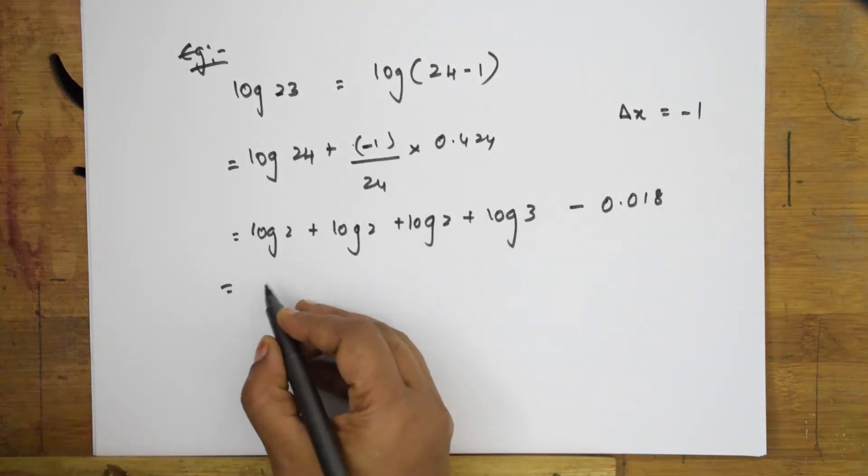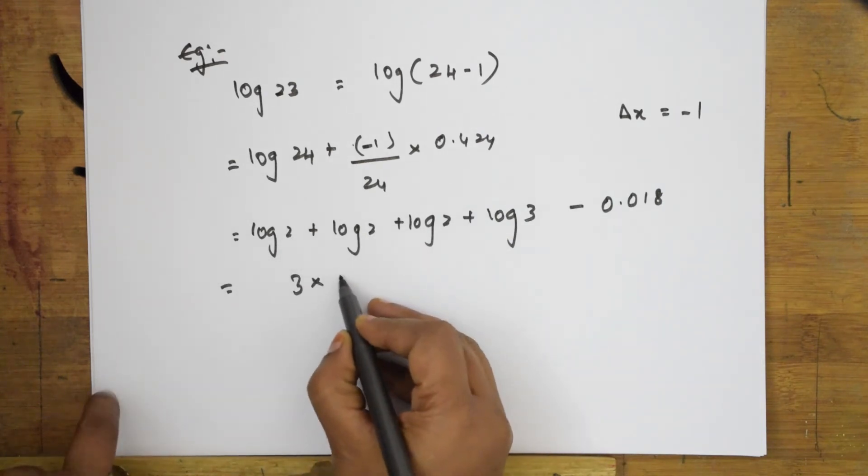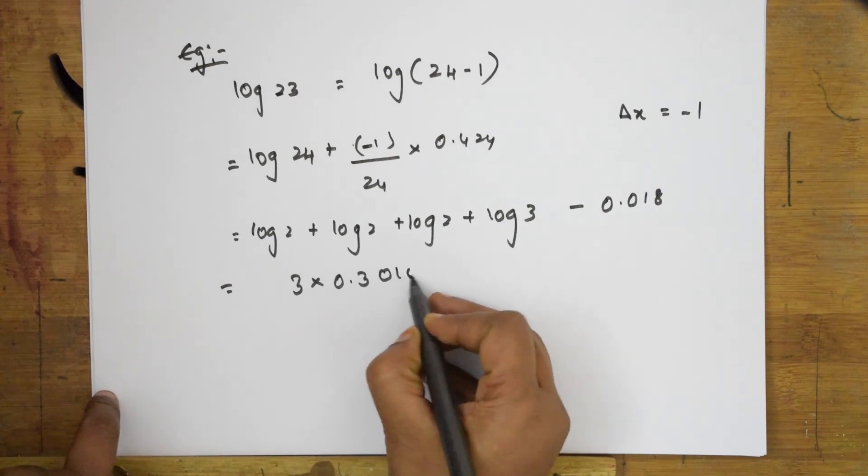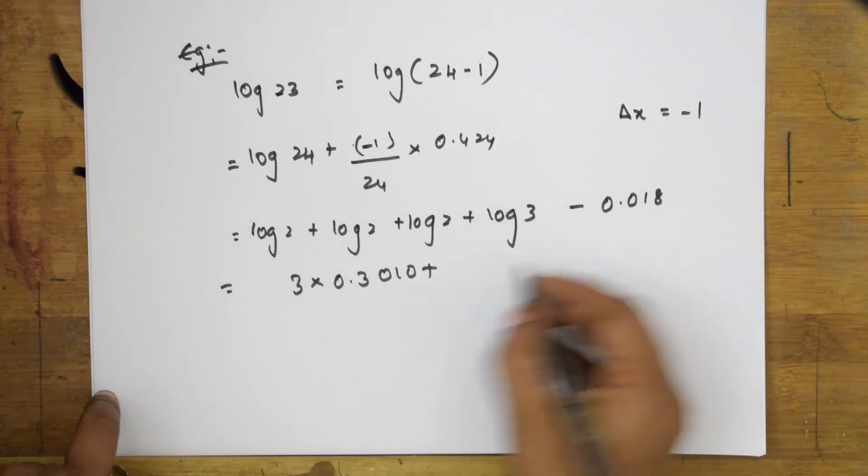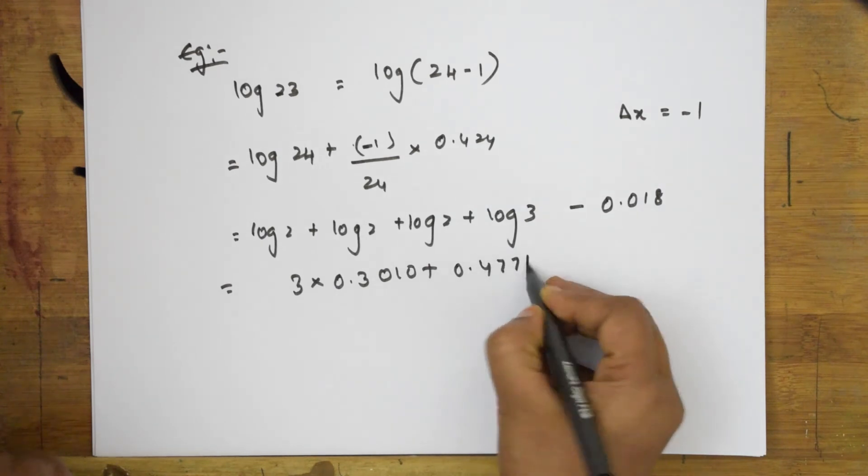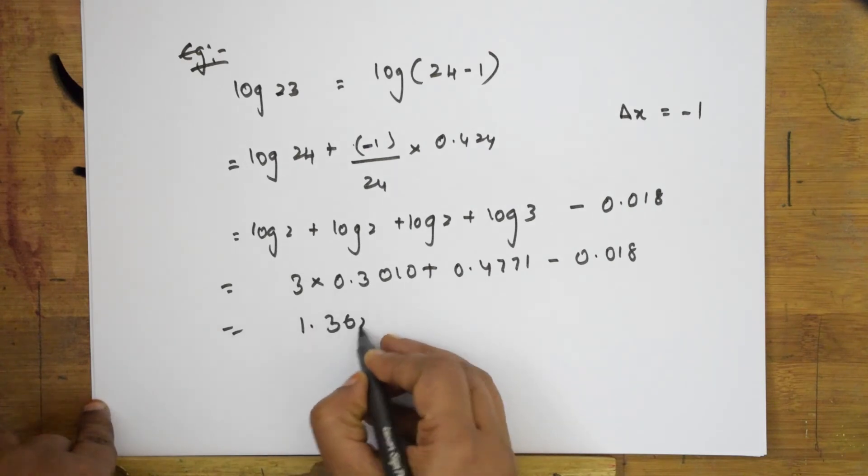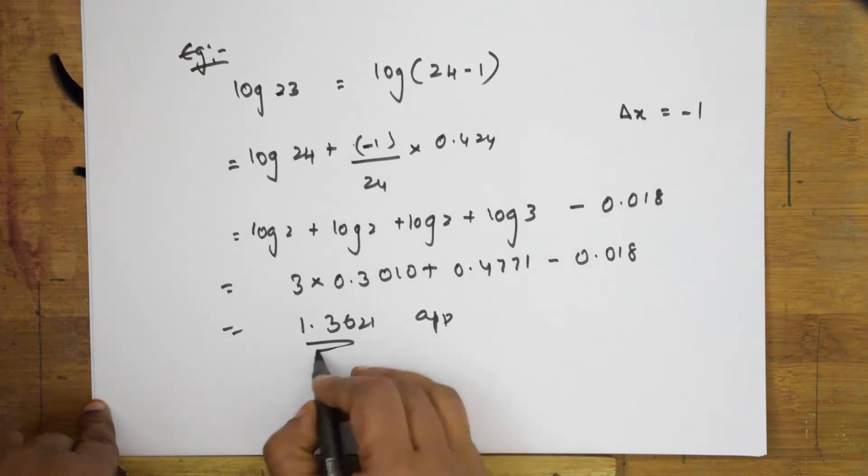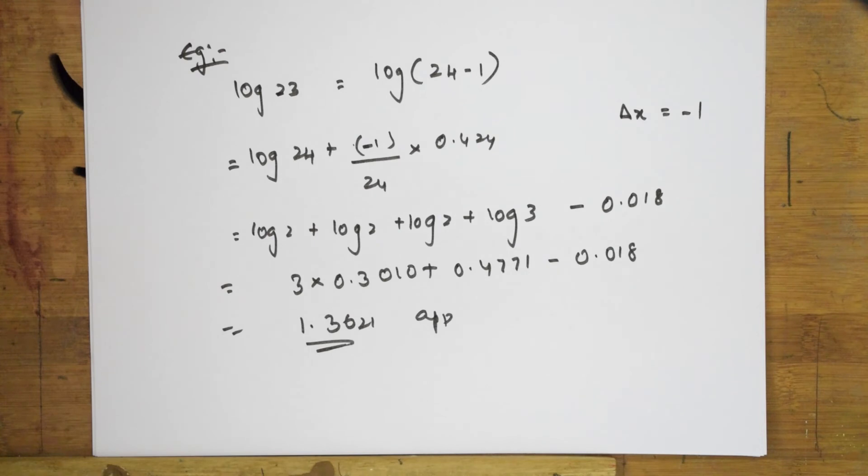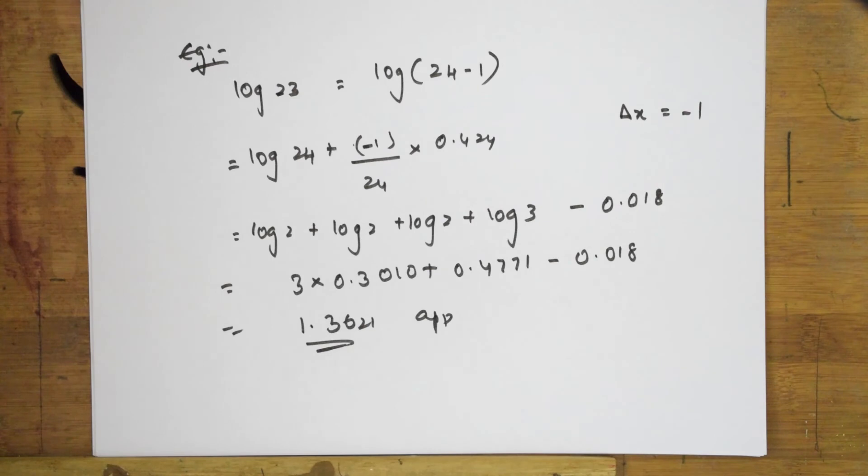Now, further log 2, how many are there? 1, 2, 3. So, 3 into, what is log 2 value which you have already studied? 0.3010. This part, when I solve, log 3 value I'll write first. It is 0.4771 minus 0.018. When I solve this, I get an answer of 0.3621 approximately. That's it. It is the perfect answer for log without log table. I memorized log 2, I memorized log 3 and I applied using calculus.